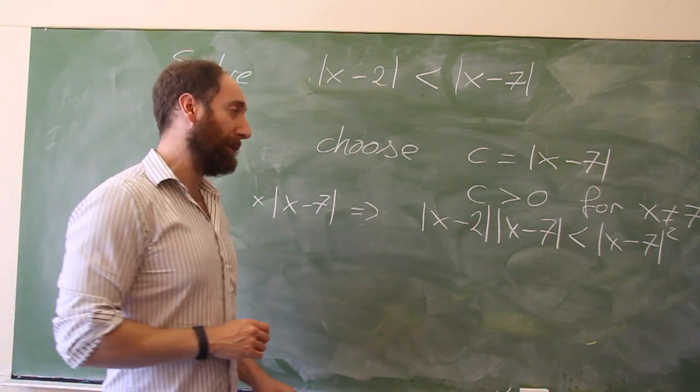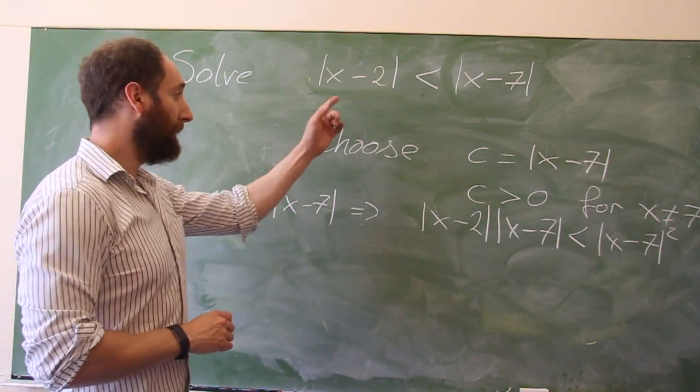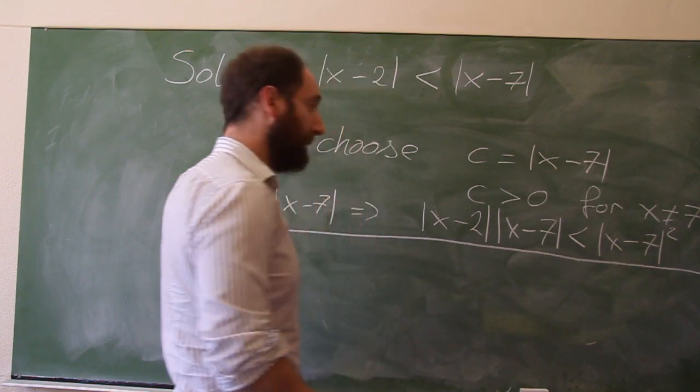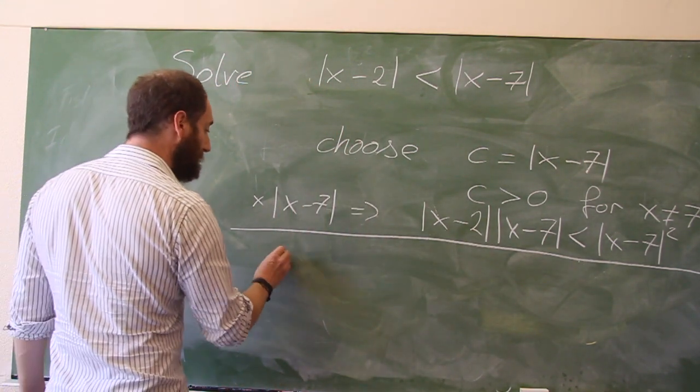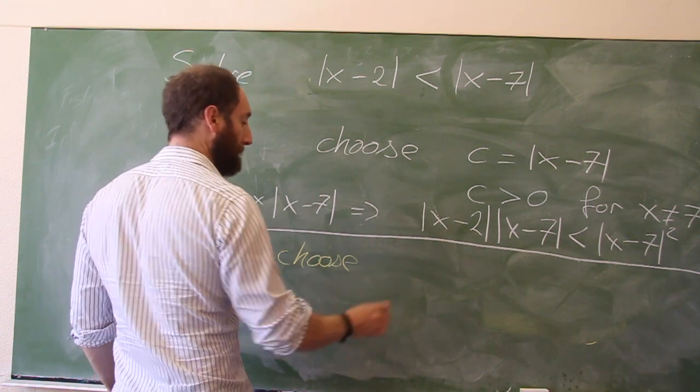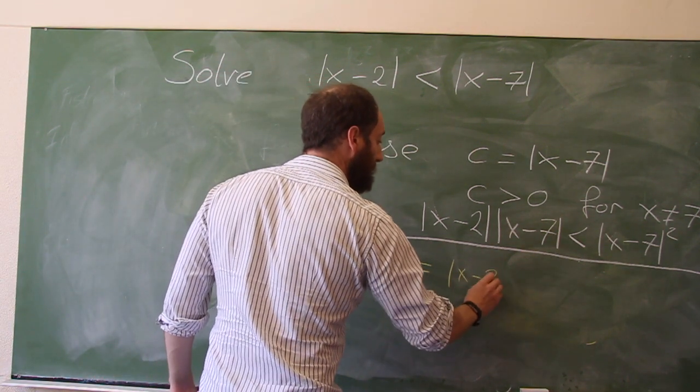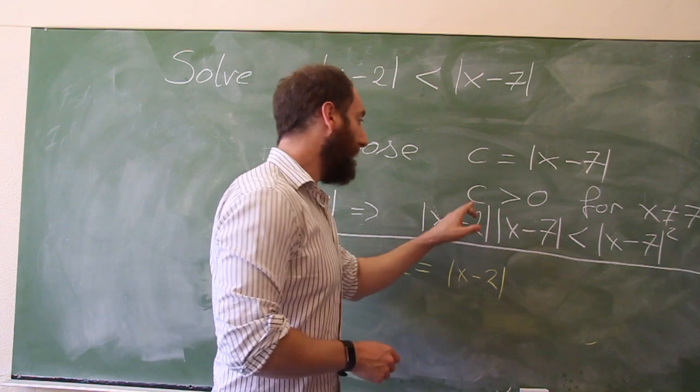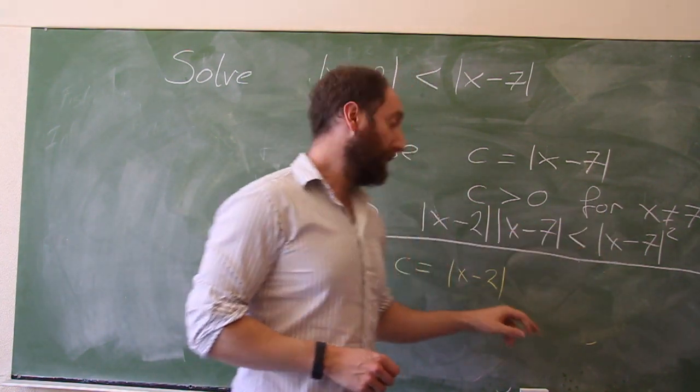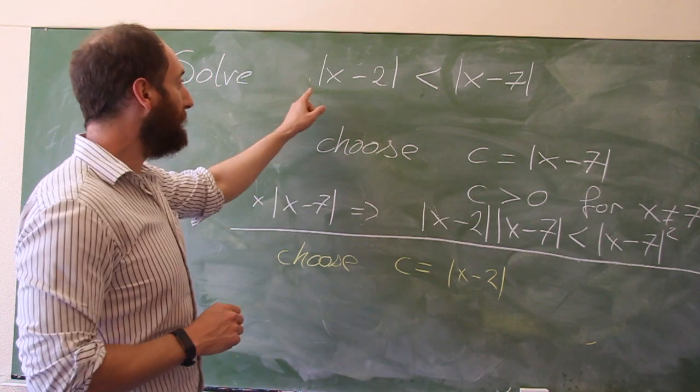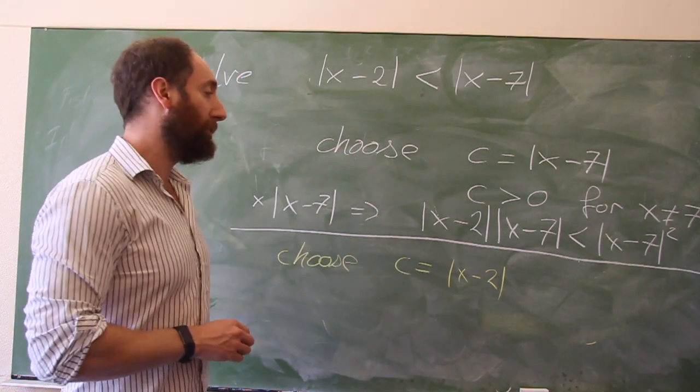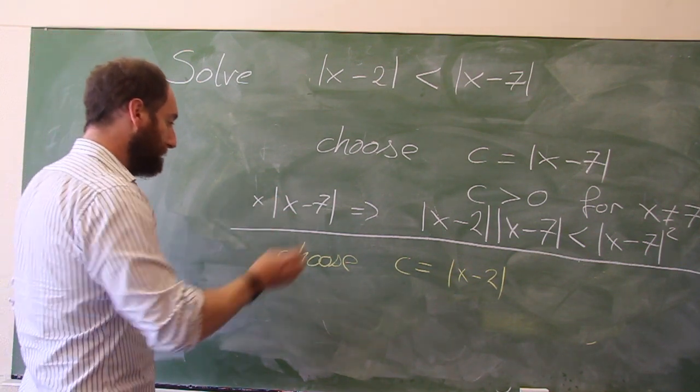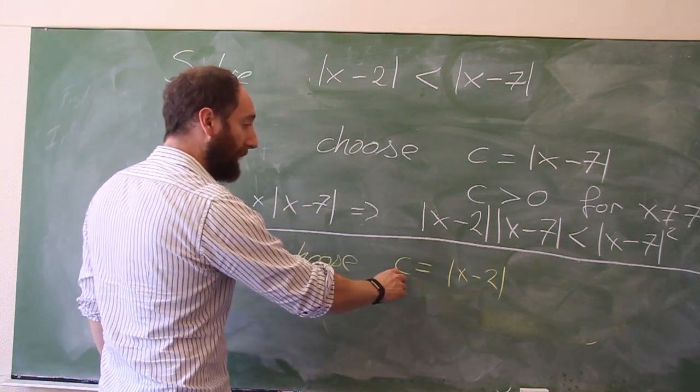So that doesn't seem to have helped us very much. In fact, it's given us now a lot more complicated equation than we started off with. But now let's take another choice for C. Now let's choose C equals X minus 2. Now in this case, indeed, we can have C greater than 0 for X not equal to 2. However, in this case, if we multiply both sides of this by X minus 2 when X is 2, indeed, we're going to get 0 equals 0. So we've got to be a little bit careful here.